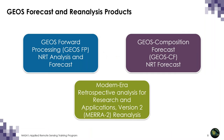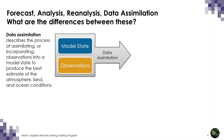This session will focus on GEOS near real-time weather and chemical forecasts and reanalysis products: the GEOS Forward Processing, or FP, analysis and forecasts; the GEOS Composition Forecast, or GSCF; and the Modern Era Retrospective Analysis for Research and Applications Version 2, or MERRA-2 Reanalysis. I want to review these terms — forecast, analysis, reanalysis, and data assimilation — and how they relate to one another.